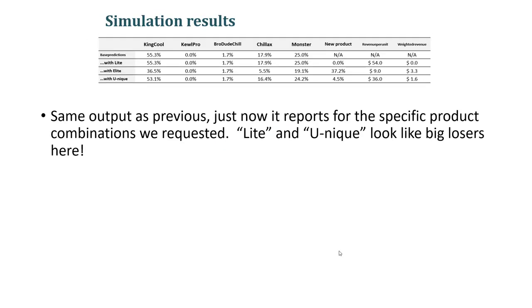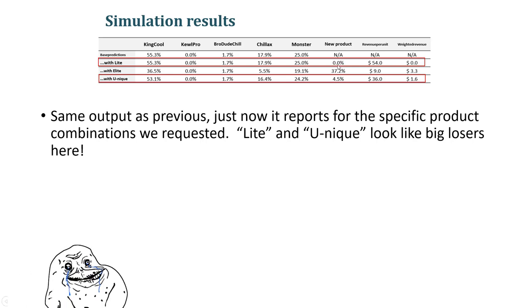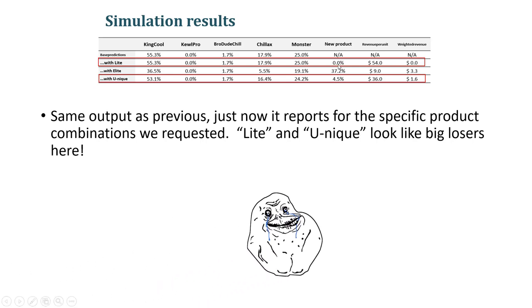In a world where we're only considering these three versions of product combinations, the simulation tells us that the light and the unique are definite losers. With the light model, we get zero market share — we're utterly dominated by all other existing market offerings. Nobody prefers us and nobody wants us.